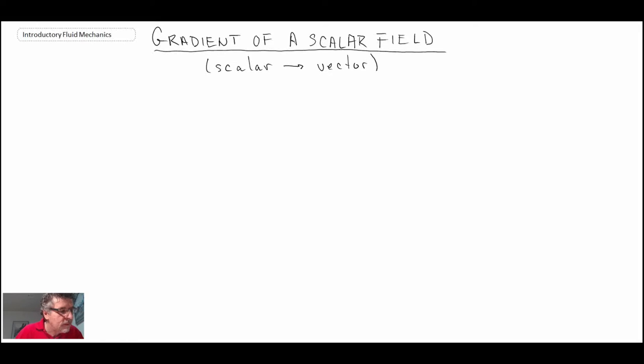Another vector operator that we use often in fluid mechanics is the gradient of a scalar field. The gradient operator takes a scalar and converts it into a vector. So we're going to begin by considering a scalar field, one that we often use in fluid mechanics is pressure. If this was heat transfer it might be temperature, but we're going to work with pressure now.